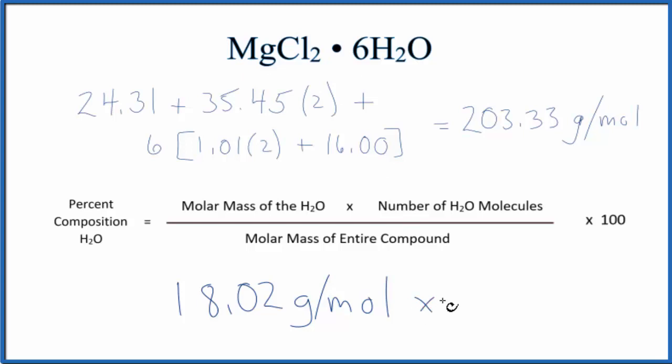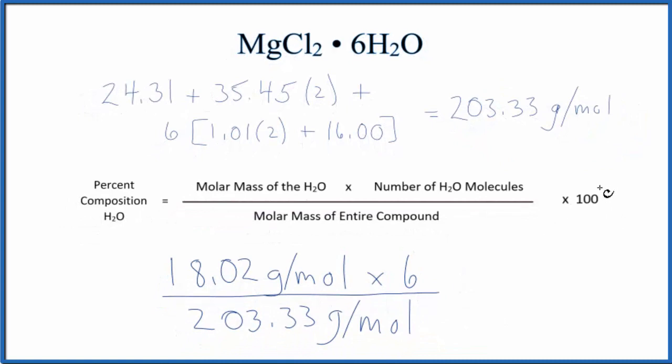So we're going to multiply this by six, and then we divide by the molar mass of the entire compound. That's what we figured out here. So let's just divide that. We multiply by 100. That'll give us the percent.